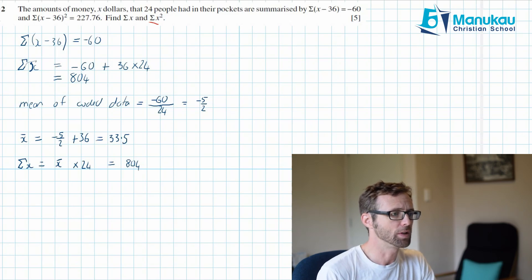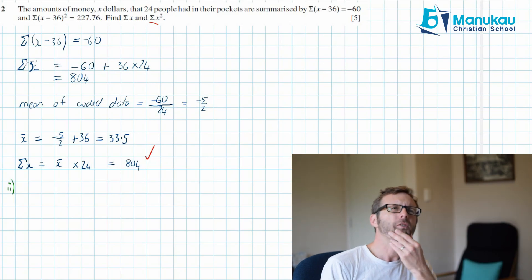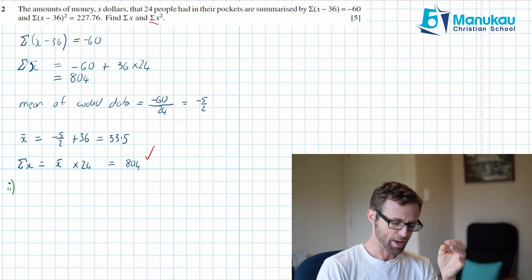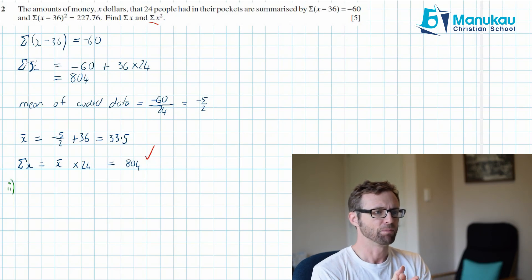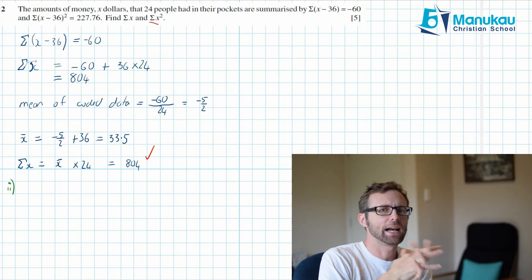Now we're moving into the second part of the question. We have done the first part. We now need to find the sum of X squared. Maybe I will use a different color at this point so that we can see what we're doing. So we want to find the sum of X squared. Now to figure this one out we have to remember our rules about what happens to this coded data.